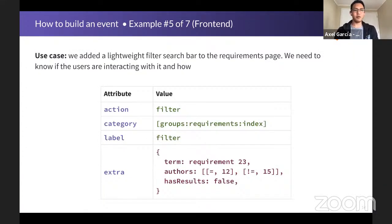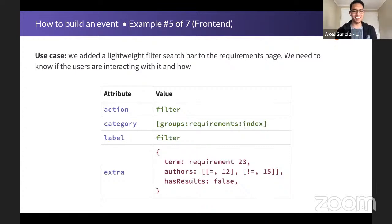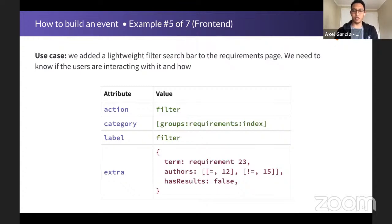The last front-end example: we added a lightweight filter search bar to the requirements page and need to know if users are interacting with it. The action is filter, the category is automatically provided, and the label is also filter. We use the extra object to pass along the term used for filtering, an array of authors with operator usage and author ID, and a Boolean value.